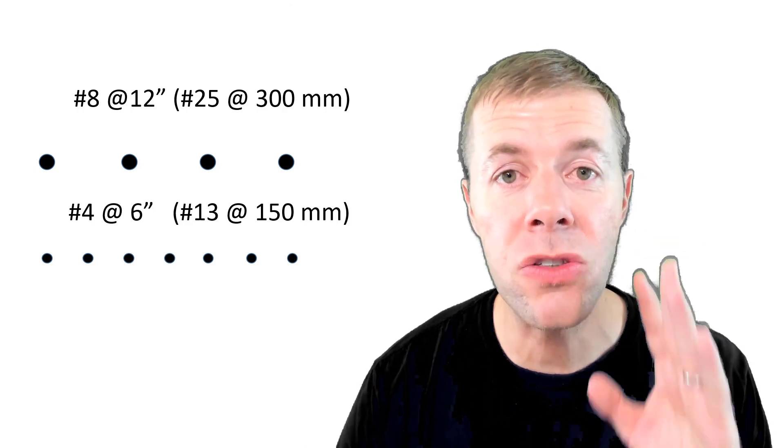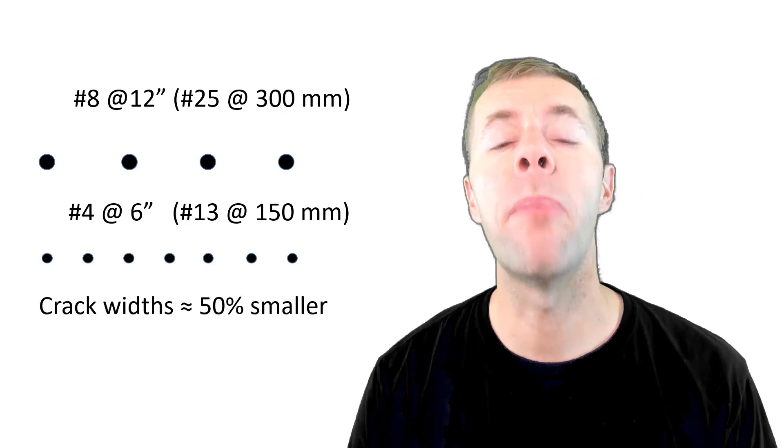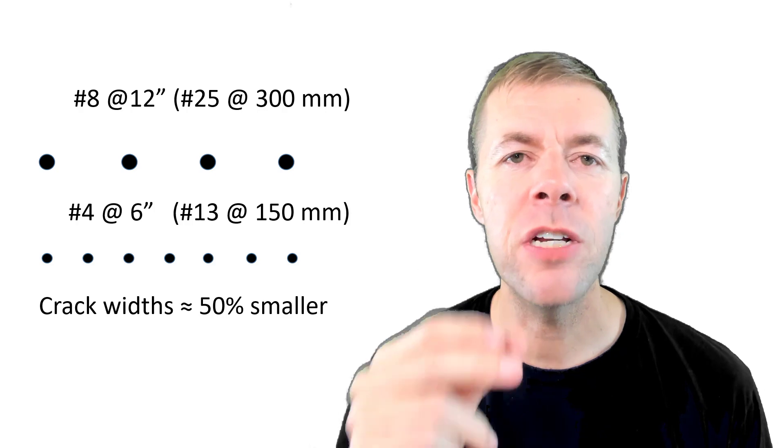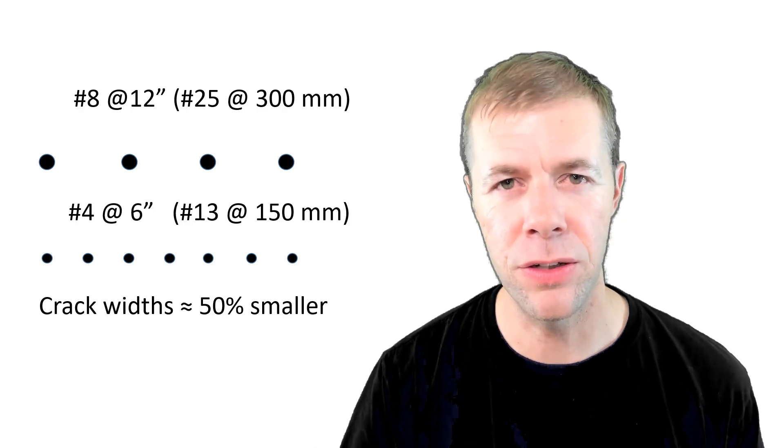Again, both of these would have the exact same capacity, but the bottom one, the crack widths, would be about 50% smaller in size, because again, these smaller, closely spaced bars do a much better job keeping the crack small.